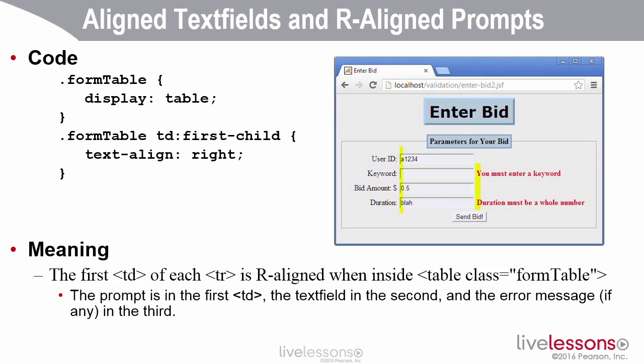I want the prompts right aligned. And I want to guarantee that even if the user resizes the browser, the prompts, the text fields, and possibly error messages always stay on the same line. The text field should never wrap around to be on the line underneath the prompt because it would be difficult to understand.